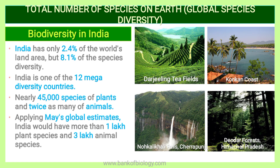If we talk about biodiversity in India, India covers only 2.4% of the world's land area but accounts for 8.1% of species diversity. India is one of the 12 mega-diversity countries, meaning there are major varieties of plants, animals, insects and fungi observable here. Applying Robert May's global estimates, India would have more than 1 lakh plant species and 3 lakh animal species.